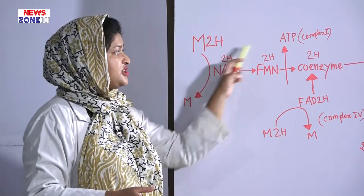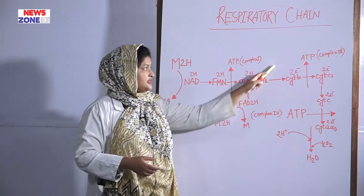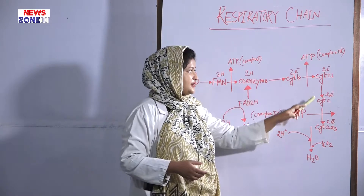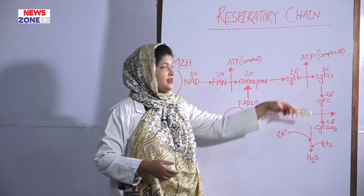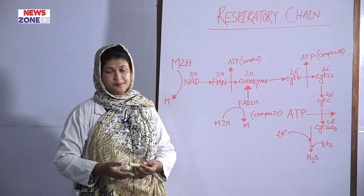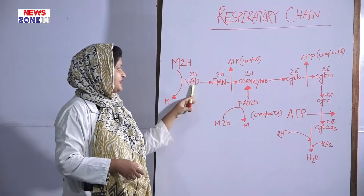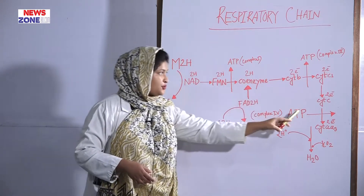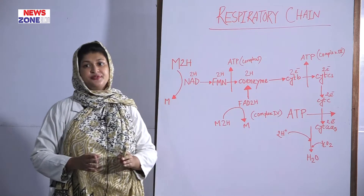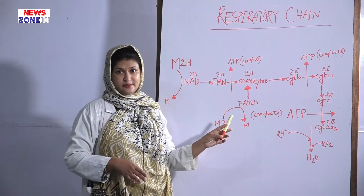These are all the hydrogen carrier components. The electron carrier components are cytochrome B, cytochrome C1, and cytochrome C. Among all these carriers, NAD, coenzyme Q, and cytochrome C are easily and freely diffusible, but the remaining components are not diffusible.